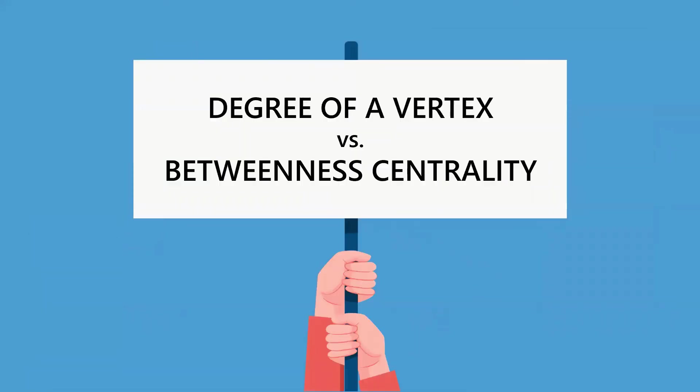To identify COVID-19 super spreaders, both degree and betweenness centrality should be taken into account, along with other concepts in graph theory and network analysis.